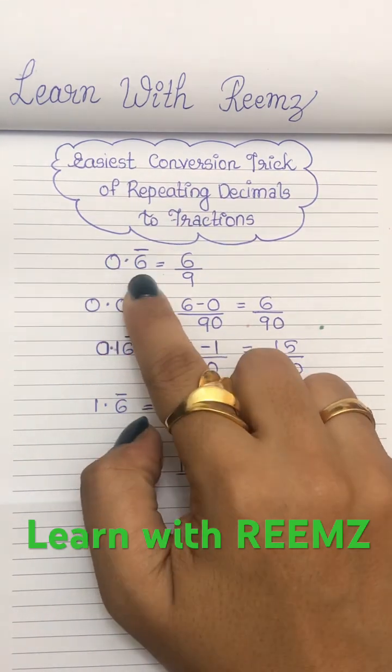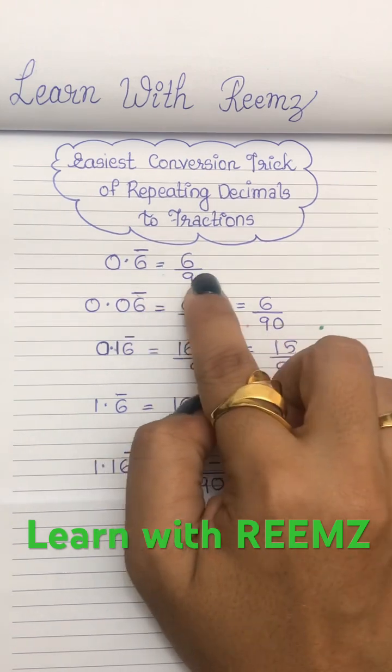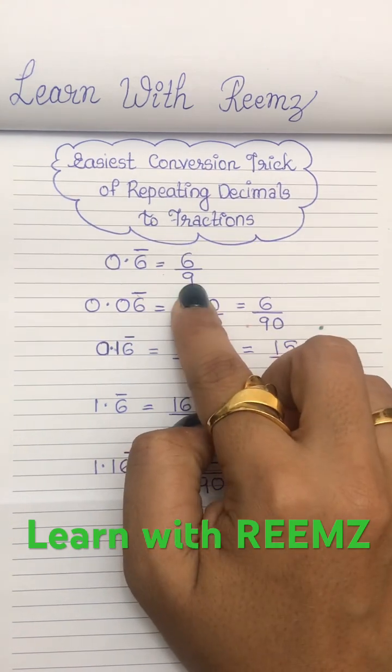The first one is 0.6 bar. Without the decimal, the number is 6. So one term is repeating, so divided by 9. So 6 by 9 is the answer.